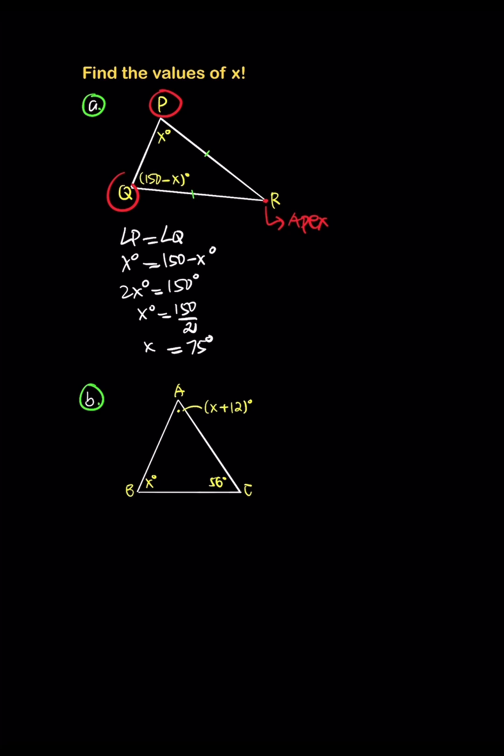The next one, we can find for B. For B, we just need to use the total angle in a triangle. So angle A plus angle B plus angle C equals 180 degrees.